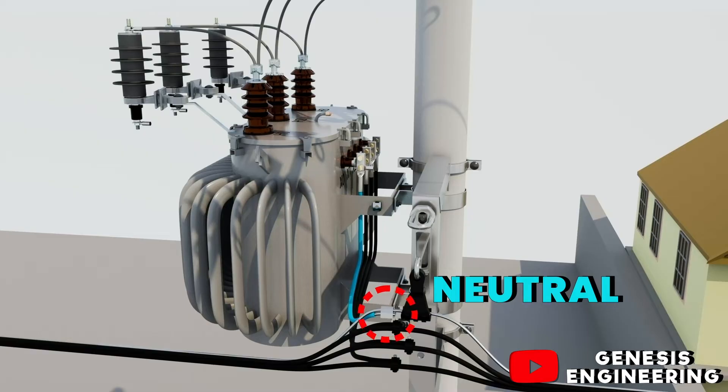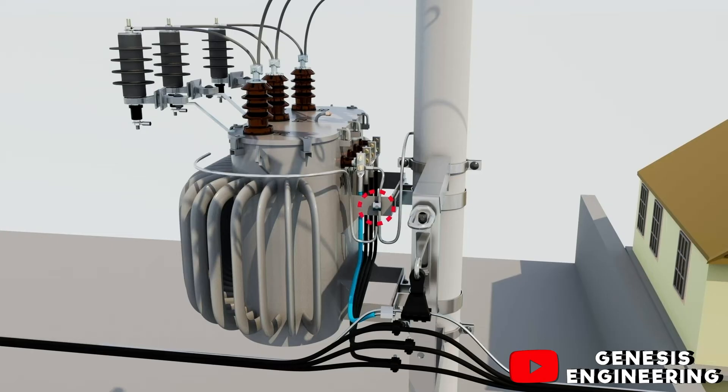Along with the neutral wire, we also have the grounding of the pole for the transformer, which first grounds the transformer housing, connects it to the transformer neutral and grounds the medium voltage lightning bolts.